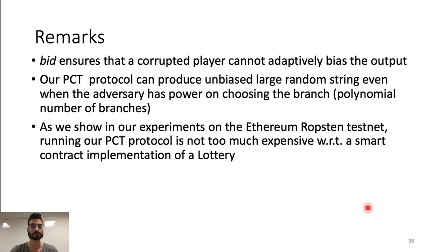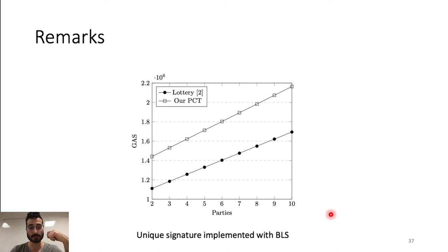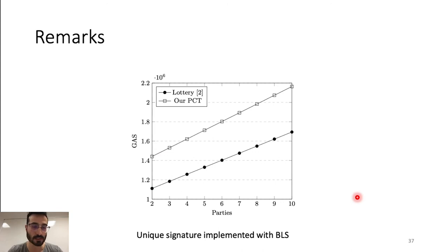As we show in our experiment on the Ethereum Ropsten testnet, running our PCT protocol is not too expensive with respect to a smart contract implementation of the lottery. We compared our PCT with lottery. In the lottery protocol, we only consider the deposit and the claim function, not the compute function, as it is not present in the coin tossing protocol. The unique signatures are implemented with BLS via a smart contract. The difference in cost is not too much, and for a single player it is sufficient 1 million gas to compute a random string with our protocol.